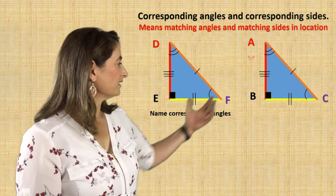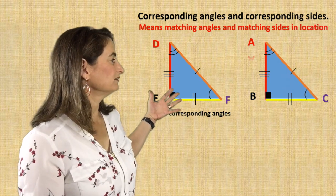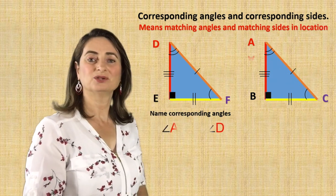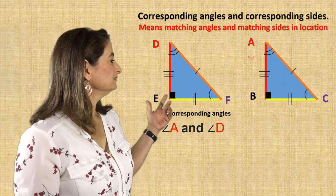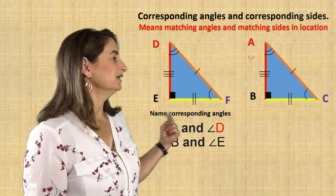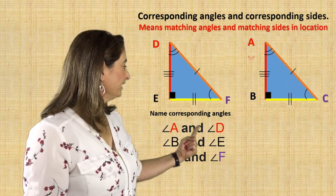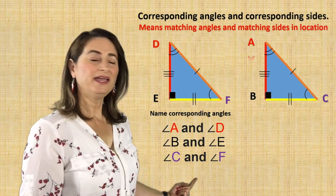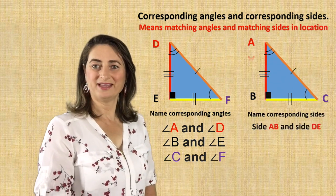For corresponding angles: if I slide triangle ABC on top of triangle DEF, which angle matches exactly in location? Angle A and angle D are corresponding angles. Angle B and angle E are corresponding angles. Angle C and angle F are corresponding angles.